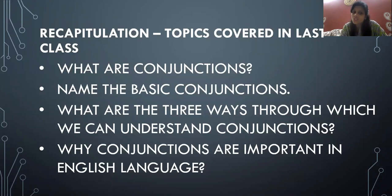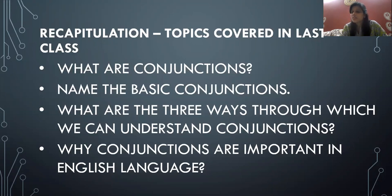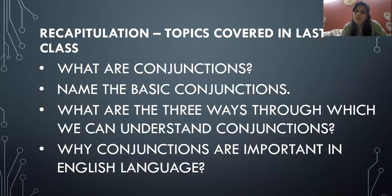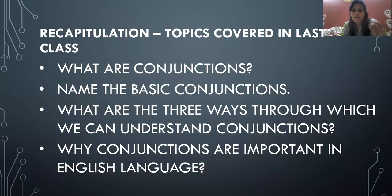What are the three ways through which we can understand conjunctions? The first is coordinating conjunction, second is subordinating conjunction, and third is correlative conjunction. Why are conjunctions important in English language? Conjunctions are important to join sentences and write in a smooth manner — to write a quote, a summary, a story, or anything. If you want to write anything, we should have the knowledge of conjunctions. So this was done in our previous class.